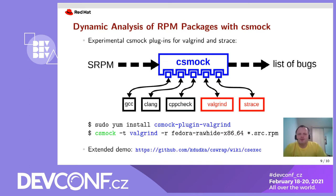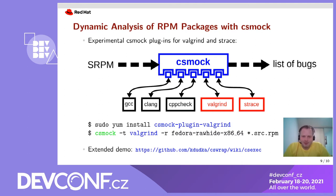Now back to csmock, the tool originally developed for static analysis of RPM packages. We have implemented experimental plugins for Valgrind and strace. These plugins are now available in Fedora and EPEL. Thanks to these plugins, dynamic analysis of RPM packages is now available through a really simple user interface. You can just pick a source RPM package that runs tests during the build and throw it at csmock together with a build root where the package can be built. Optionally, you can specify some extra arguments for dynamic analyzers.